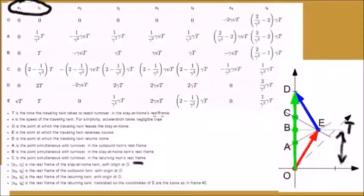v is the speed of the traveling twin. O is the event at which the traveling twin leaves the stay-at-home twin. This is this point over here. E is the event at which the traveling twin reverses course and D is the event where the traveling twin arrives home.